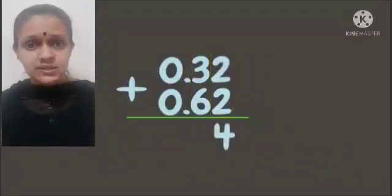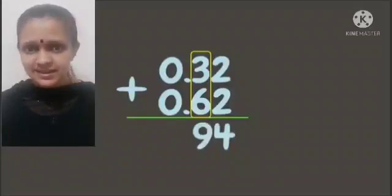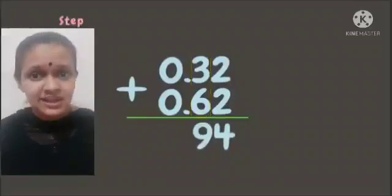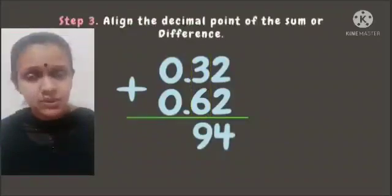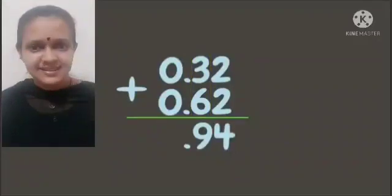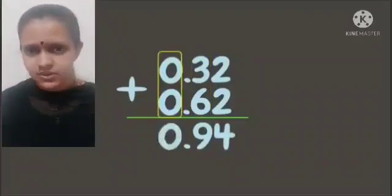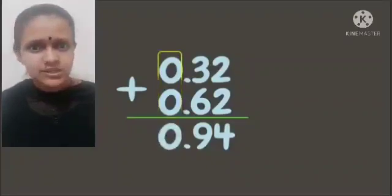2 plus 2 is 4, and 3 plus 6 is 9. Then align the decimal point of the sum from the decimal points above. 0 plus 0 is 0, so we got the answer 0.94.